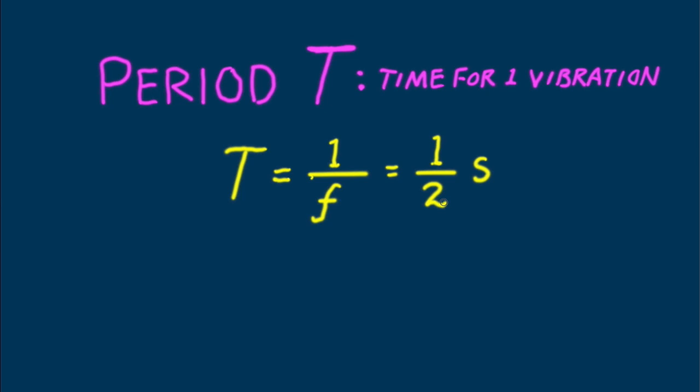The period of a wave is the time for one complete vibration. If an object's frequency is known, its period is the reciprocal. If the frequency of vibration is two hertz, the time needed to complete one vibration, the period of vibration, is one-half second.